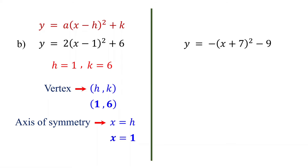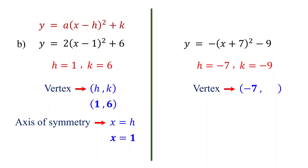Now try this one. Identify the values of h and k. h is the opposite of the number inside the parentheses, so it becomes negative 7. k is the constant term, so it is negative 9. Therefore, the vertex is the point negative 7 comma negative 9. The axis of symmetry is the line x equals h, so it is x equals negative 7.